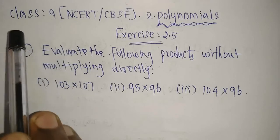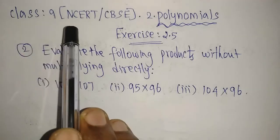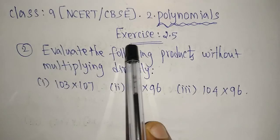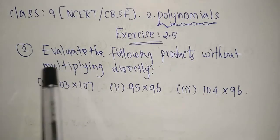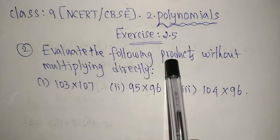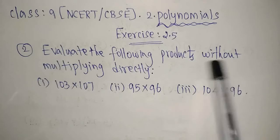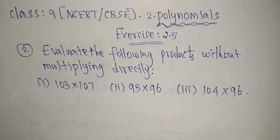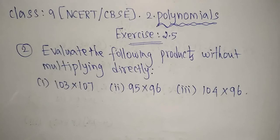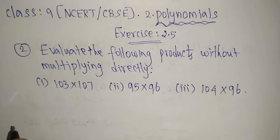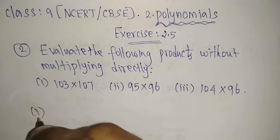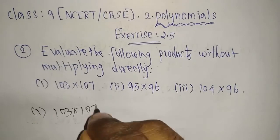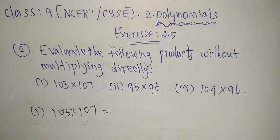Welcome to the channel. Today we are going to see Class 9 NCERT/CBSE Chapter 2 Polynomials, Exercise 2.5 Roman number 2: evaluate the following products without multiplying directly. We have three subdivisions. The first one I am going to take is 103 into 107, so how can we write this?